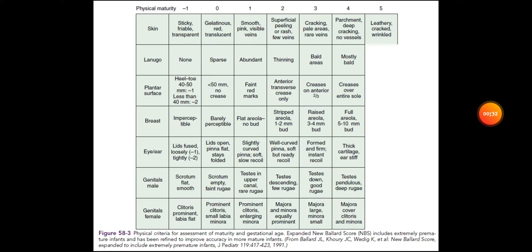Under physical criteria we have six parameters: skin, lanugo, plantar surface, breast, eye/ear, and genitals — both male and female. The grades that can be assigned range from negative one through zero, one, two, three, four, and five. Looking at the first parameter, which is skin.